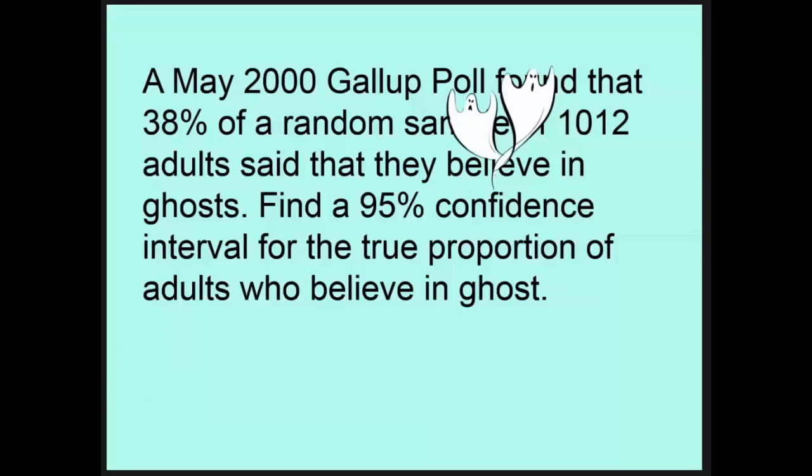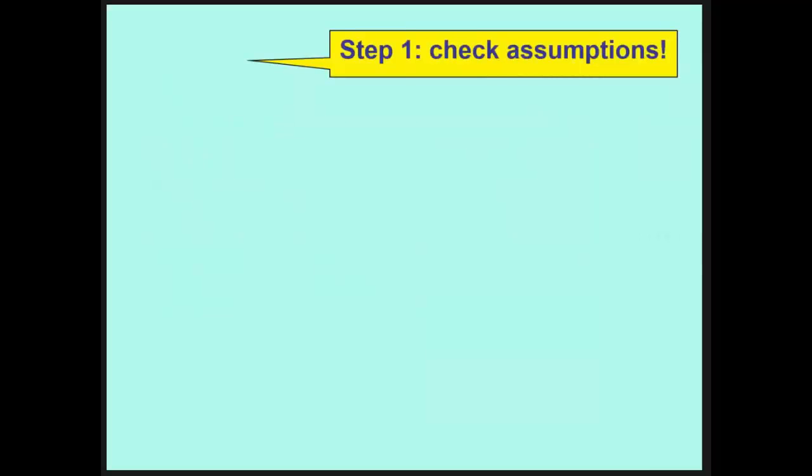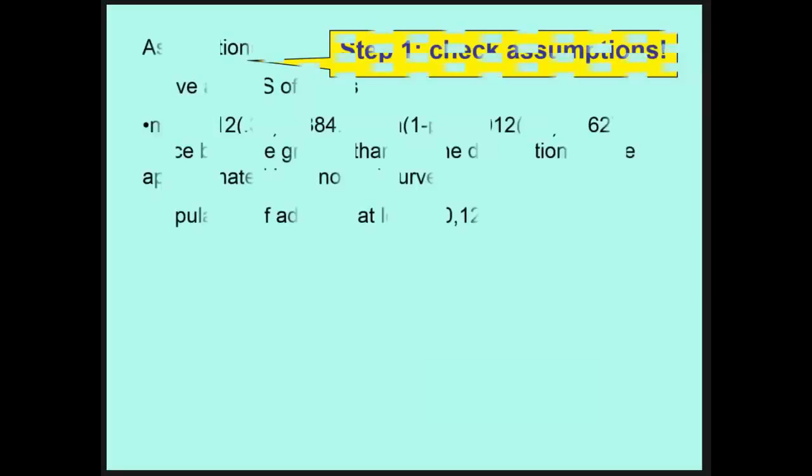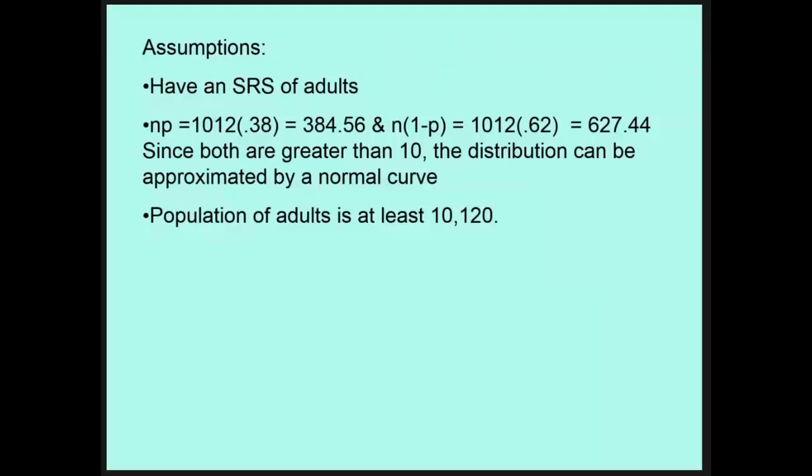We're going to jump through our hoops and see that we have done all of our steps correctly. Step one, check assumptions. We need to make a series of statements indicating that we've at least considered those three statements about the assumptions. Number one, that we have an SRS of adults. We need to physically calculate NP and N times 1 minus P, and actually show that it happens to be bigger than 10, which implies that we can use a normal distribution, a normal curve to estimate it. And is it safe to say we had 1,012 in our sample, is it safe to say when we look at all the population of the United States, for example, that we have at least 10,000 people in there, then that's a safe assumption. We at least acknowledge it, that we thought about it and we wrote a sentence about it.